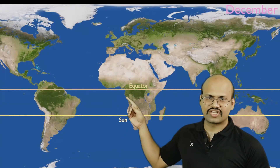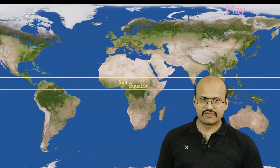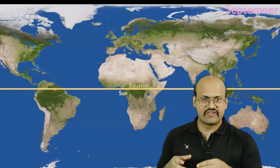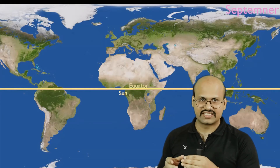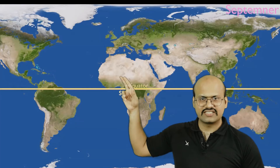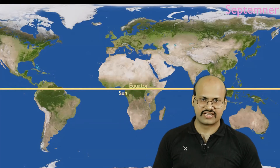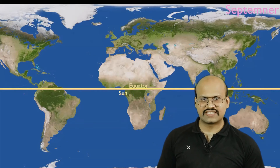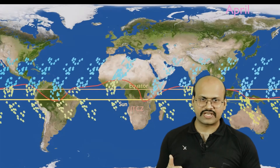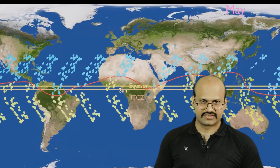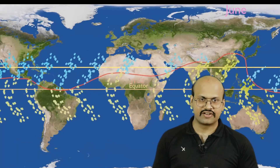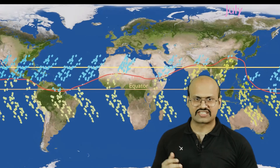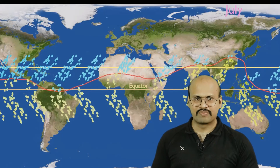The sun continuously shifts its position over the Earth because the Earth revolves around the sun on an inclined axis, so the region directly under the sun varies. Therefore, the region where convectional rain occurs also varies. If we look more precisely, we can see the ITCZ — the Intertropical Convergence Zone — where tropical winds from both hemispheres meet. This is the region where convectional rain mainly occurs, and it is not a straight line but curves based on hemisphere and the landforms below it.